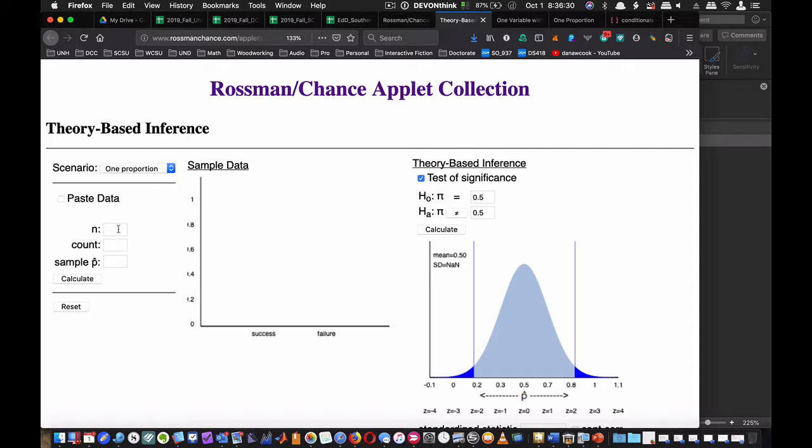It's a one-proportion test. My n is 148 because Sasha chose 148 random students. My count is 76—she had 76 successes. We get p̂ = 0.513. I want to test significance. Her friend told us 60% of people live in a dorm, so H₀: π = 0.6. Our alternative hypothesis is π ≠ 0.6, a two-tailed test.